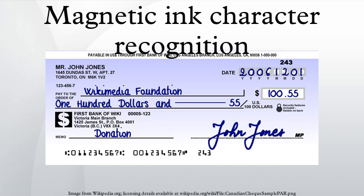Before the mid-1940s, checks were processed manually using the sort-a-matic or top-tab key method. The processing and clearance of checks was very time-consuming and a significant cost in bank operations. As the number of checks increased, ways were sought for automating the process, and standards were developed to ensure uniformity in financial institutions. By the mid-1950s, the Stanford Research Institute and General Electric Computer Laboratory had developed the first automated system to process checks using MICR. The same team also developed the E13B MICR font.